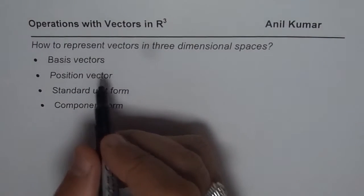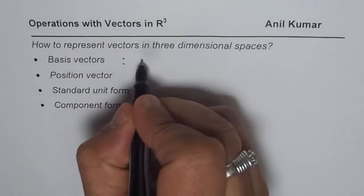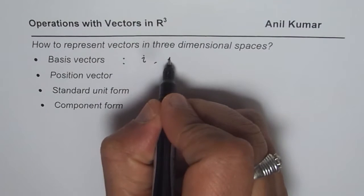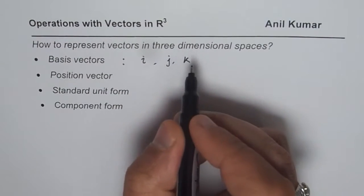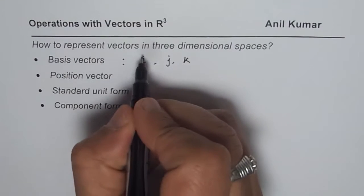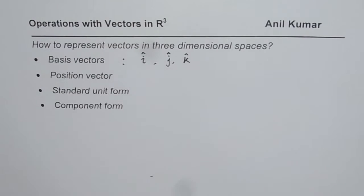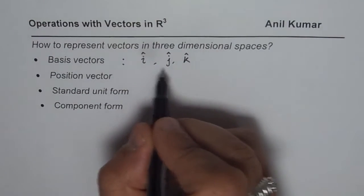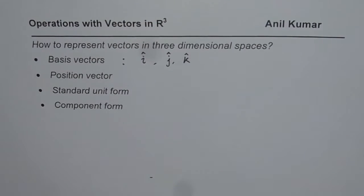Now what are basis vectors? As you did in R2, the vectors i, j, k forms the basis vectors for R3. These are unit vectors which I will be representing in this form. Even if I write i, j, k without bolding them, you should think that these are unit vectors.